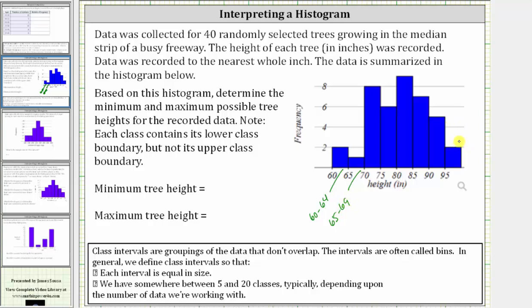So if we take a look at the last bar, the height of this bar indicates the frequency or number of trees that have a height in the interval from 95 to 99 inches. The height of 100 inches would be the next class or next interval.